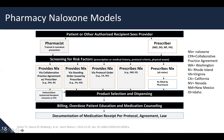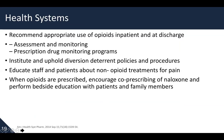In health systems, clinical pharmacists typically recommend appropriate use of opioids at the inpatient setting and at discharge. They can assess and monitor the patient, look up the prescription drug monitoring program results using the controlled substance database, help with diversion, and ensure medications get to where they need to go. Other team members can provide education about non-opioid treatments for pain, and when opioids are prescribed, encourage co-prescribing of naloxone and perform bedside education with patients and family members.